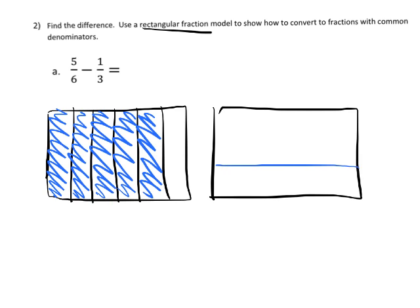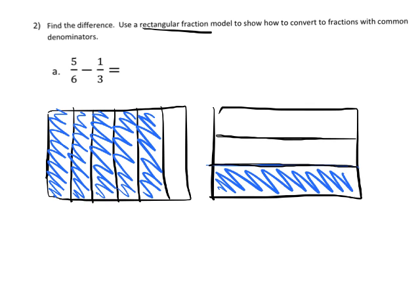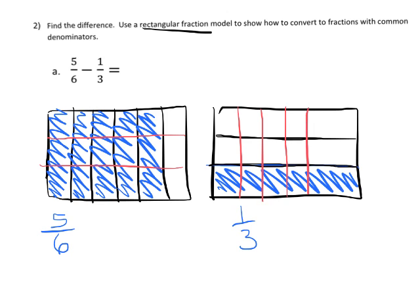Then we're going to cut the second rectangle into thirds going the other way in black, and shade in one of those thirds. So we have five sixths here and one third here. Now we're going to cut each of the sixths into thirds, and each of the thirds into sixths.